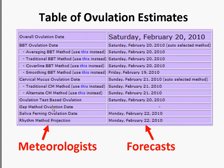To tie this analogy back to ovulation charting, let's look at the table of ovulation estimates from MyFertilityCharts.com. On the left are different symptoms and analysis techniques — similar to the meteorologist — representing different sources of ovulation date estimates. On the right are ovulation dates, similar to the weather forecast. Let's tie this back to some fertility charts to better understand certainty in the context of ovulation charting.